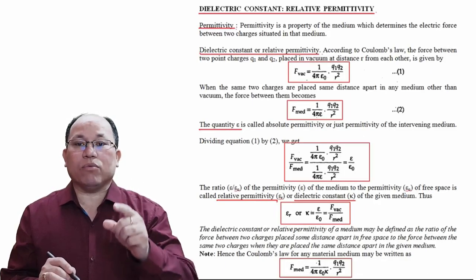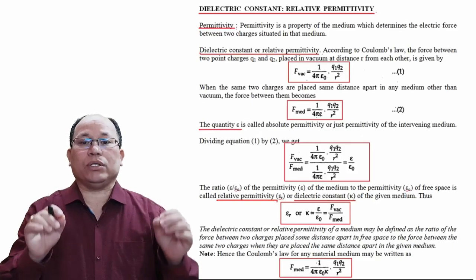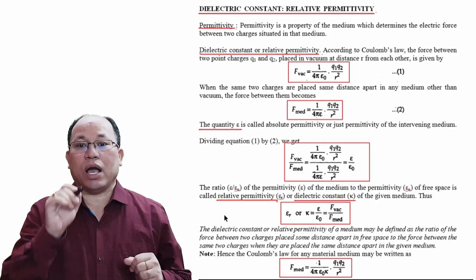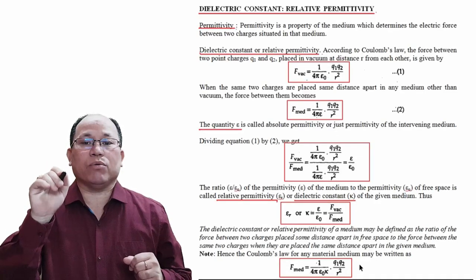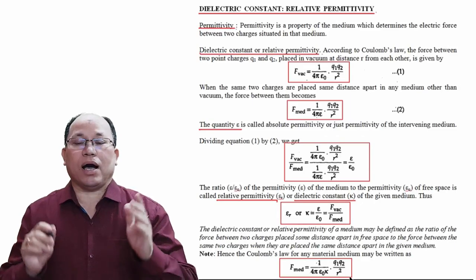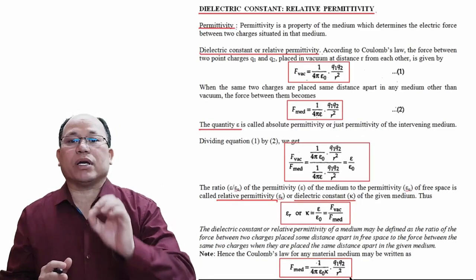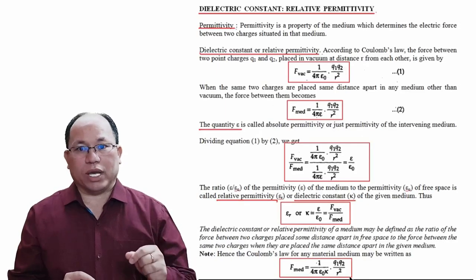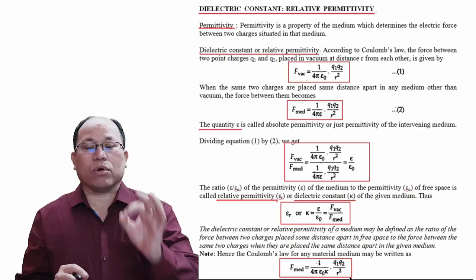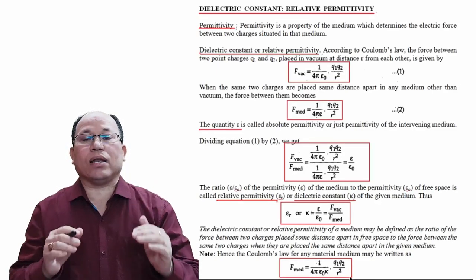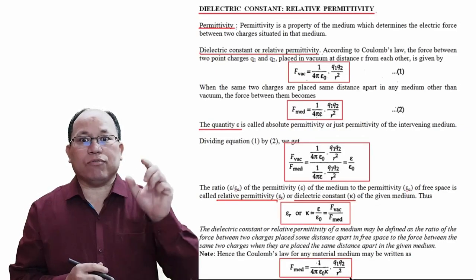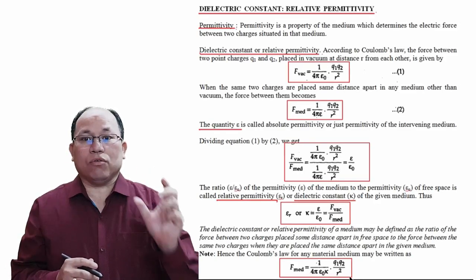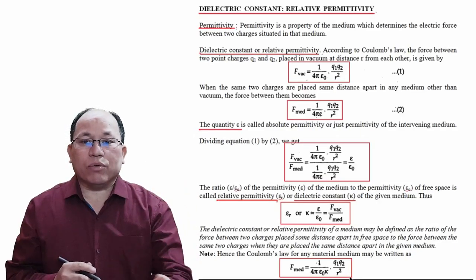Hence, Coulomb's law for any material medium may be written as: F_medium = (1 / 4πε₀k) × (q1·q2 / r²). For example, for air k = 1, for water k = 80, and for metal k = 30, and so on.